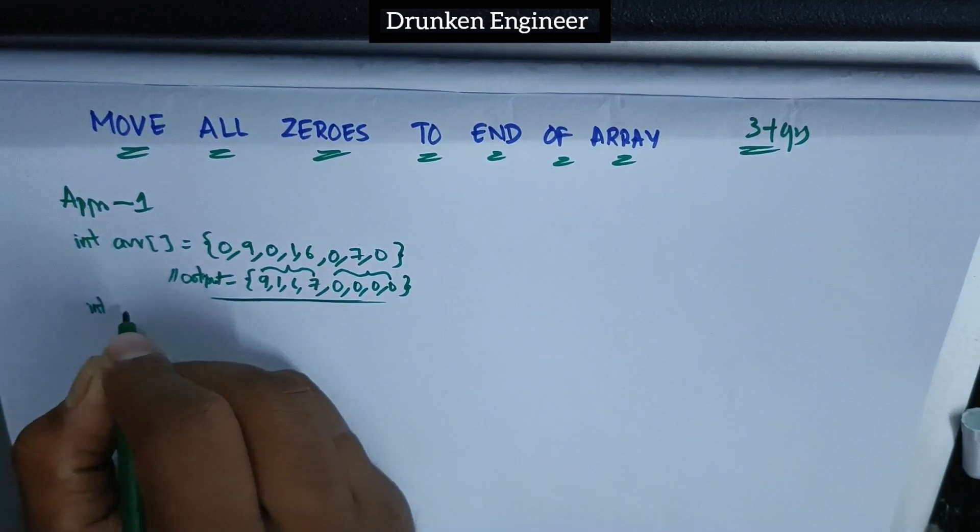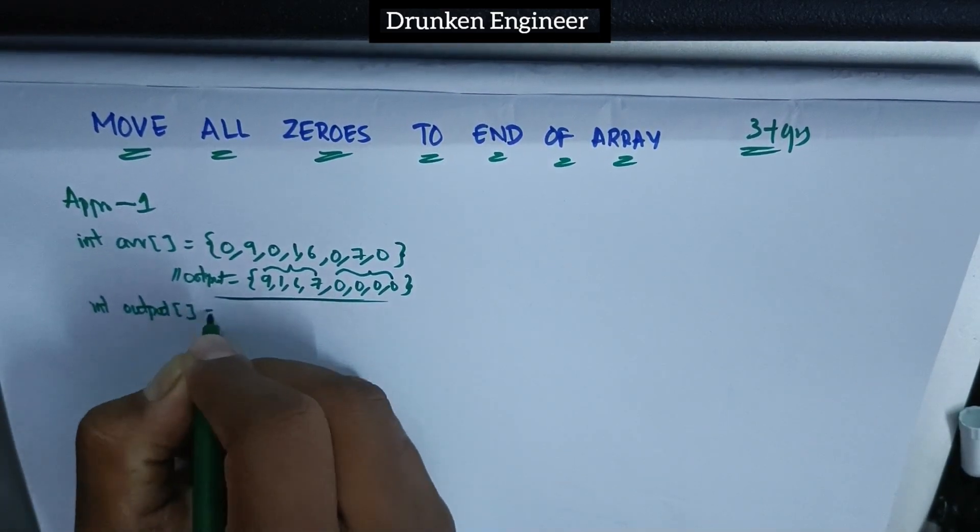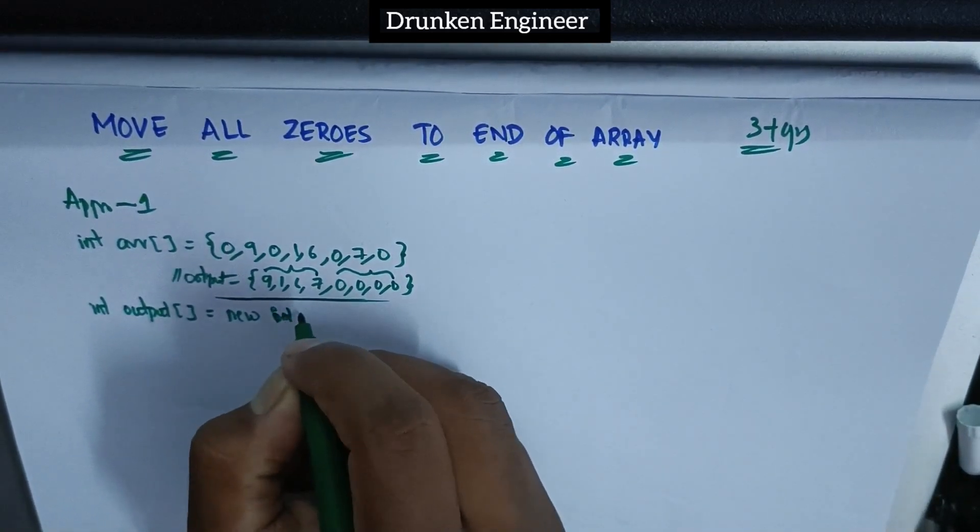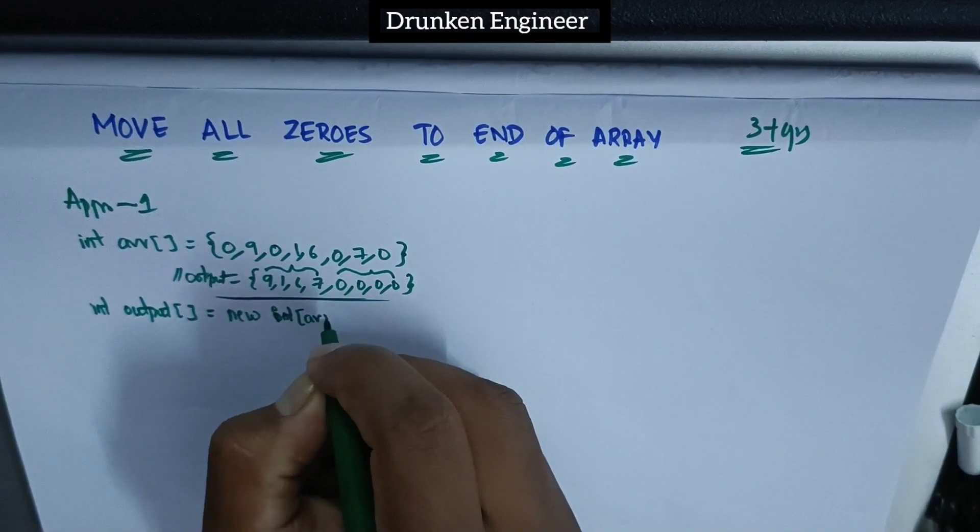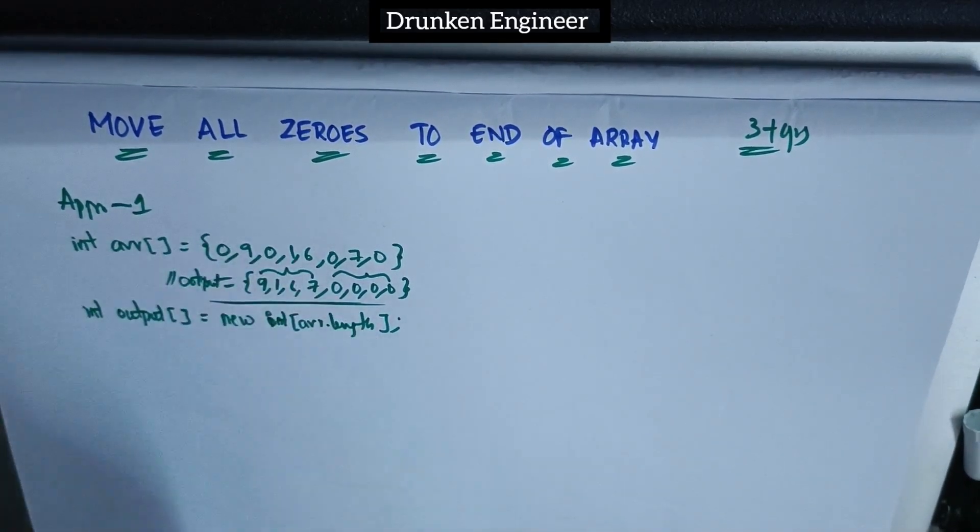We can take one more array, an output array. Declare it as new int of array length, because it cannot be greater than the input array.